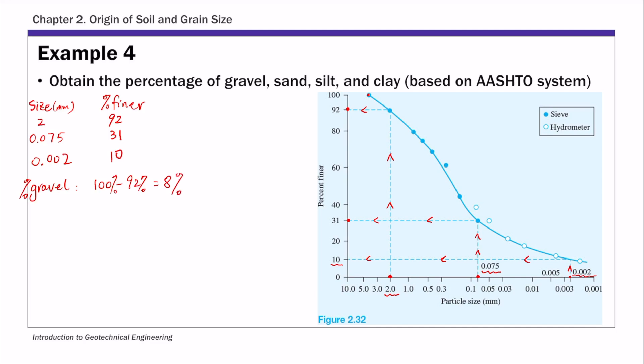So that's 8%. And then sand, percent of sand, it's basically the percentage of soils between this 2 millimeter and 0.075 millimeter so that's 92 percent minus 31 percent which is 61 percent. So that's basically the percent of soil smaller than 2 millimeter and larger than 0.075 millimeter.